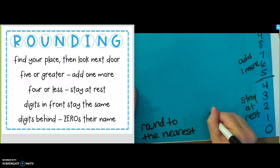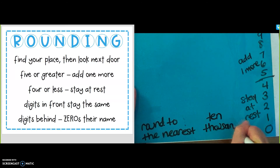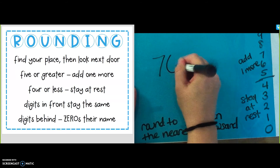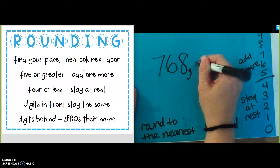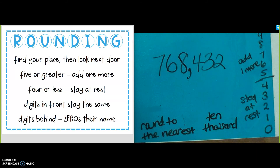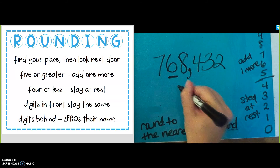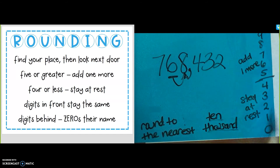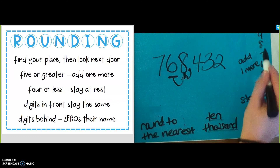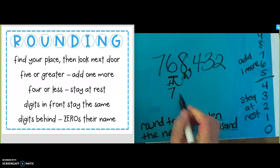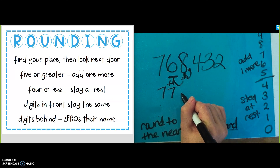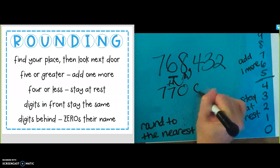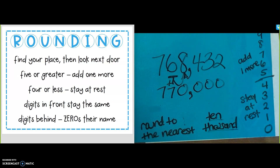I will try one more. I know I told you I was done, but I'm going to challenge you here for a minute. Now let's round to the nearest 10,000. I'm going to give you a bigger number: 768,432. Find your place — my place is the ten-thousands place, and that place is a 6. Look next door. Next door is an 8. 5 or greater, add one more. The number next door is 5 or greater — it's an 8 — so I add one more to the 6; it becomes a 7. Digits in front stay the same. Digits behind — 0 is their name — so the 4, 3, and 2 all become 0s. When I round 768,432 to the nearest 10,000, I get 770,000.